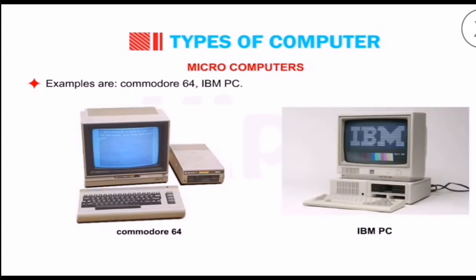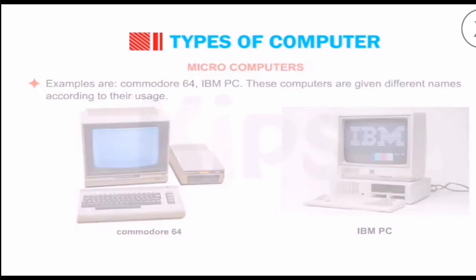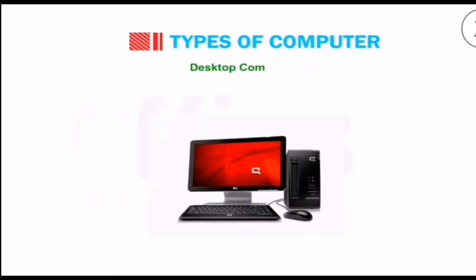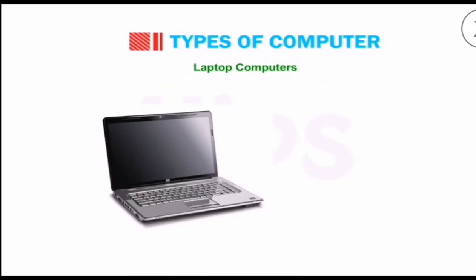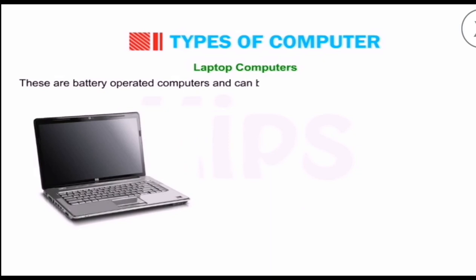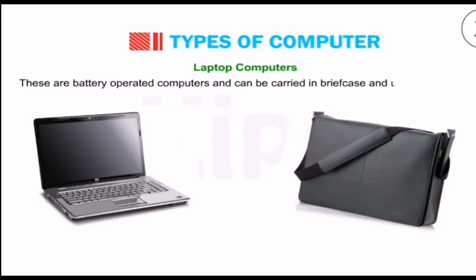The first microcomputer type is desktop computer. We can keep desktop computers on top of the desk due to their small size. That is why it is called desktop computer. But you cannot carry it anywhere. The second one is laptop computer. These are very small in size. You can place them in your lap. They are battery-operated and can be carried in a briefcase and used while traveling. You can carry it anywhere if you want.